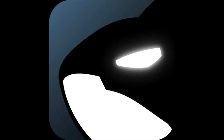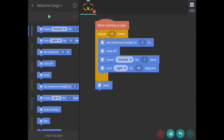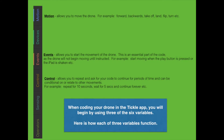I'm going to show you how to begin some basic coding in the Tickle app, something that will eventually look at motion, events, and controls. When coding your drone in the Tickle app, you will begin by using three of the six variables: motion, which allows you to move the drone forward, backwards, and take off; events, which allows you to start the movement of the drone; and control, which allows you to repeat and ask for your code to continue for periods of time.